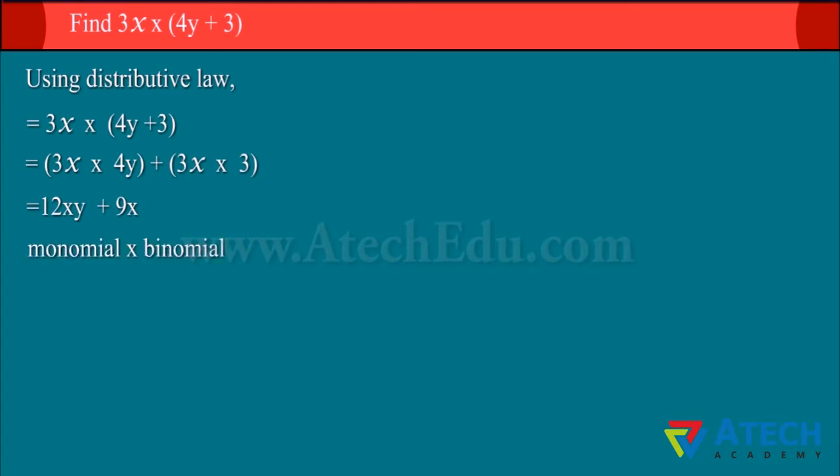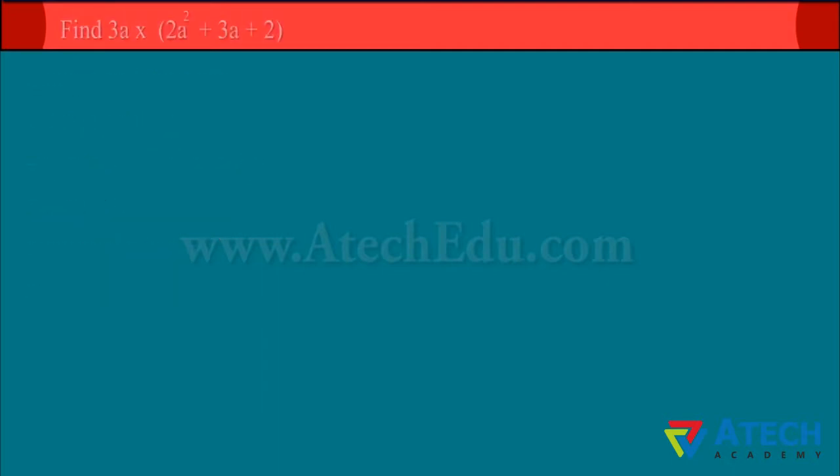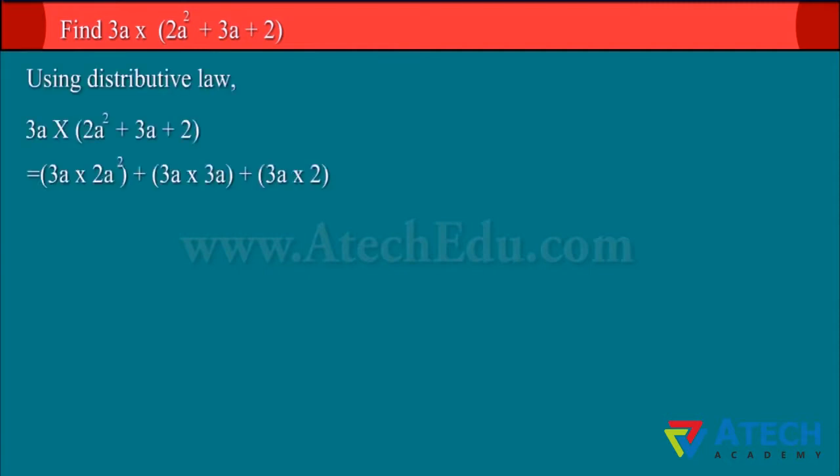We shall observe that the product of monomial and binomial is binomial. To multiply a monomial by a trinomial, we have to use distributive law. We multiply each term of the trinomial (2a², 3a, and 2) by the monomial 3a and add products.